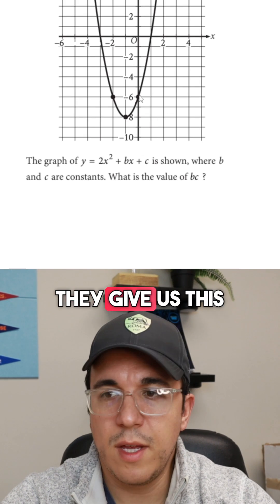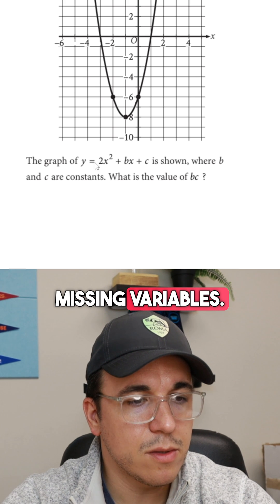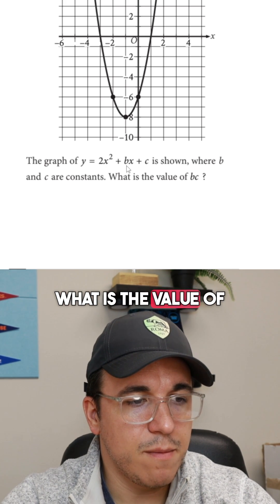All right, let's get into number 21. Here they give us this graph and they also give us an equation with a few missing variables. What is the value of b times c?